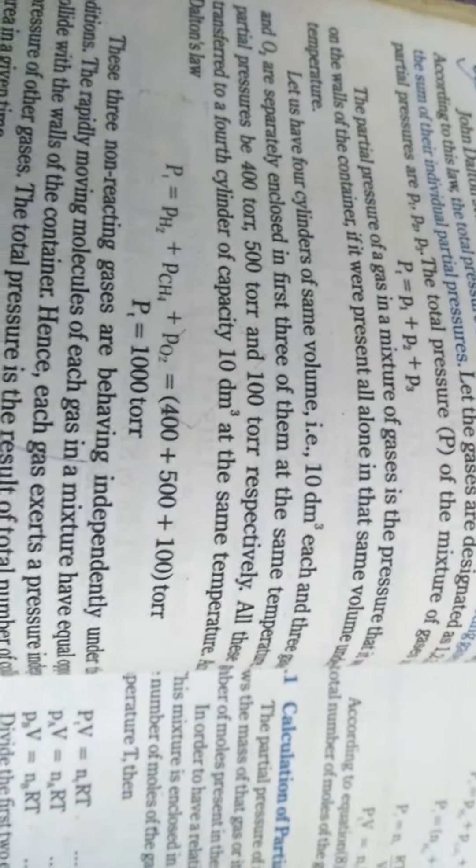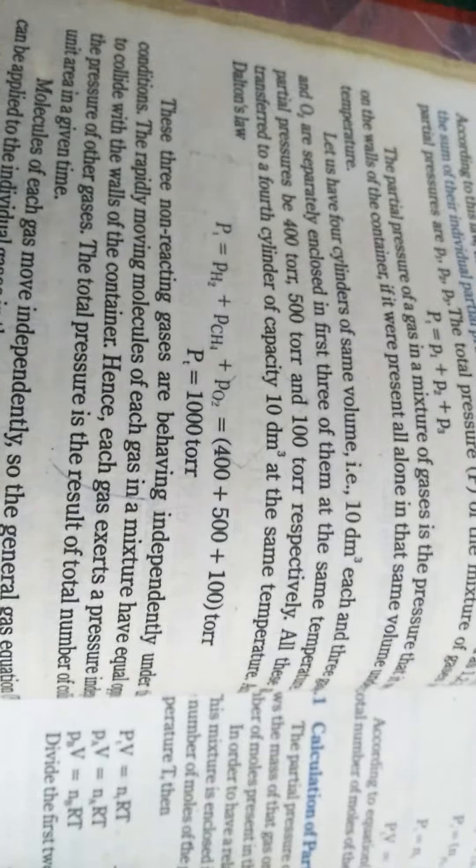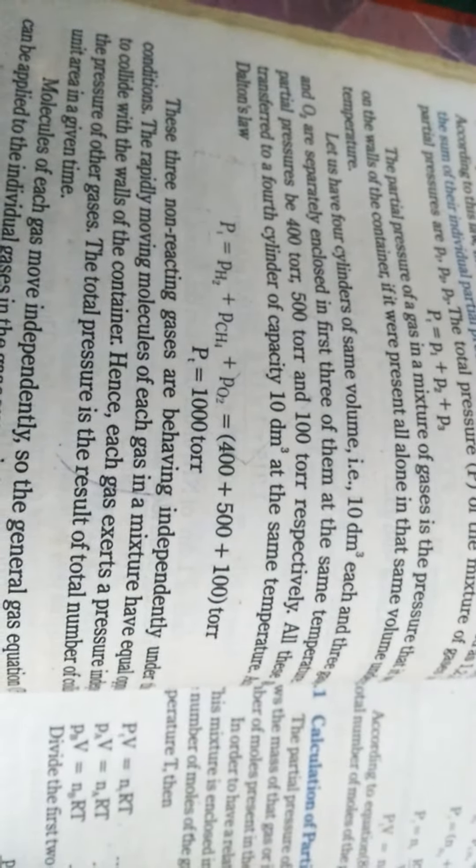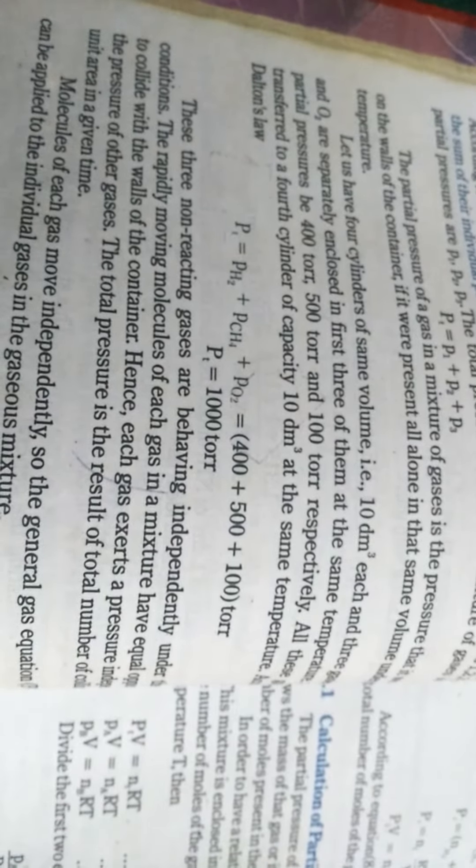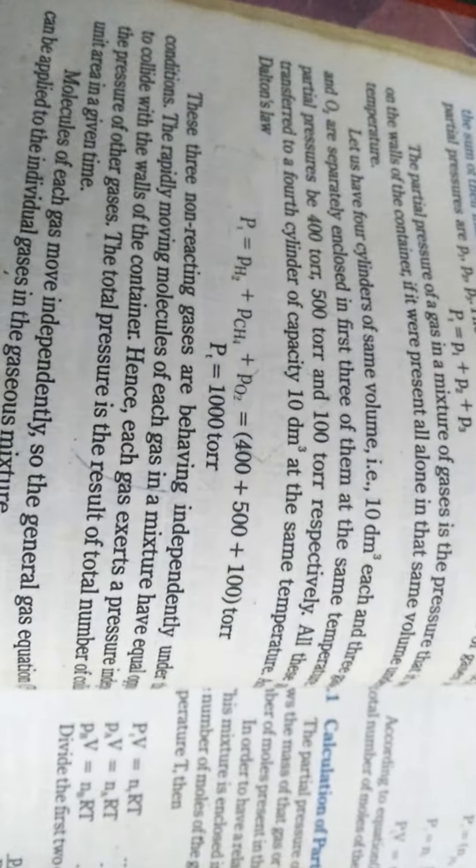Ab humare paas example hai, for example, aap ke paas gases hai: hydrogen gas, methane gas aur oxygen gas. Toh aap inke partial pressures ko plus ker lenge and then you will get the total partial pressure that comes out to be 1000 torr.